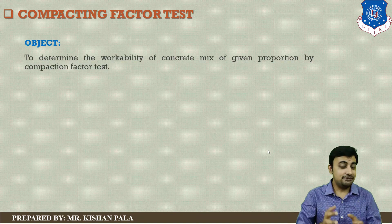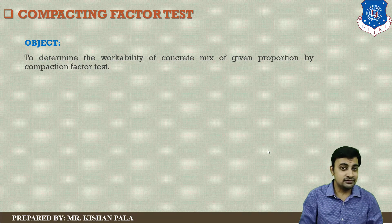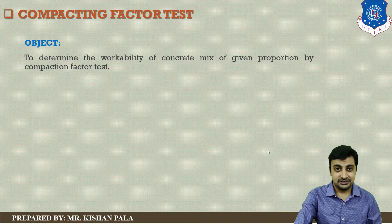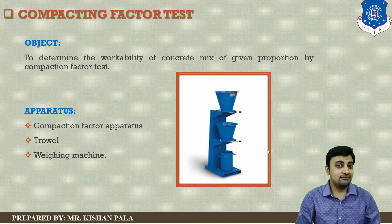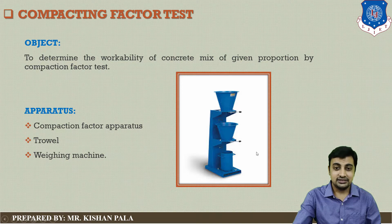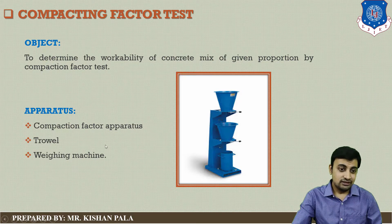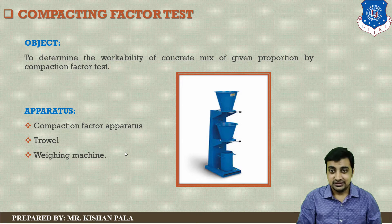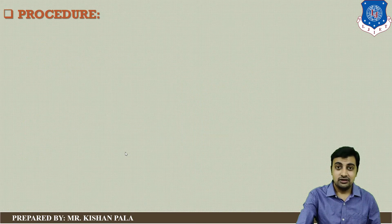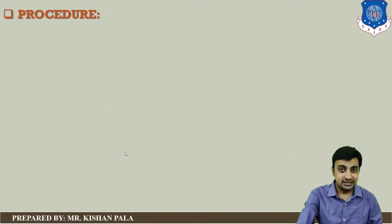The objective is to determine the workability of a concrete mix of given proportion by the compaction factor test. You can see on your screen the apparatus used for finding the compacting factor test. This is the compacting factor apparatus having an upper hopper, lower hopper, and cylindrical mould. We require the compaction factor apparatus and a weighing machine for weighing of samples.